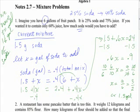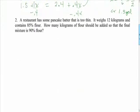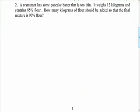When we're doing these problems, they're all a little different, so the strategy I will tell you is that you should start with figuring out what's in the current mixture and then figuring out what you have to add to achieve the percentage that you want. Let's go on to the next one. This time we're dealing with a restaurant that has some pancake batter that's too thin. It weighs 12 kilograms and contains 85% flour.